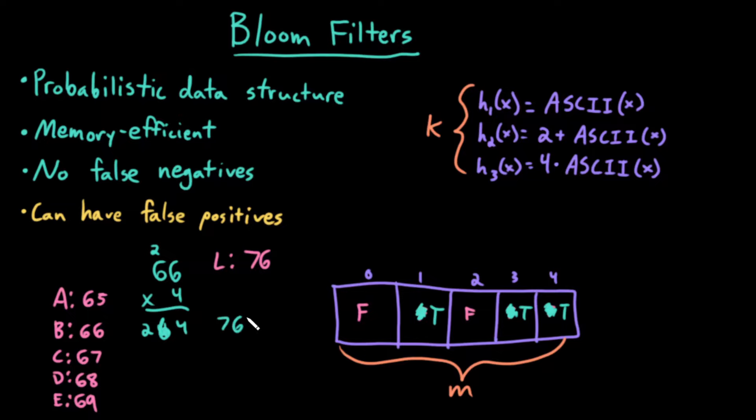76 times 4 is 304, mod 5 is 4, which is also true. So each hash function that I used on element l, the corresponding index was true. So it seems to me as if l could theoretically exist in this bloom filter, even though in reality I know that the only element that I inserted was b. So this is an example of a false positive. My bloom filter said, hey, I don't know, maybe l exists. I have no way of knowing otherwise.